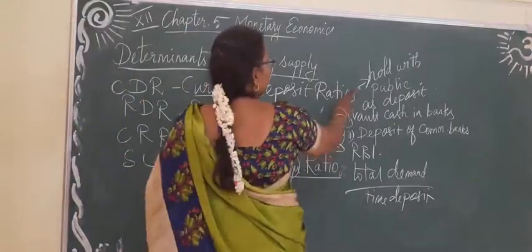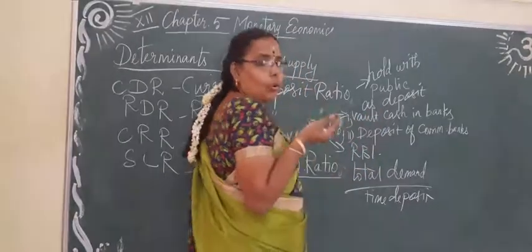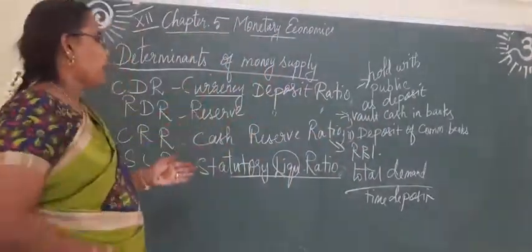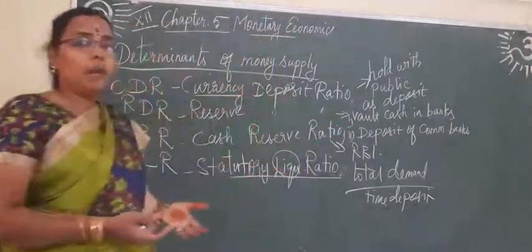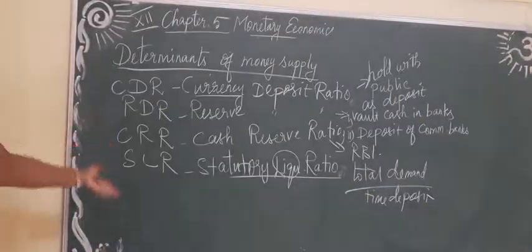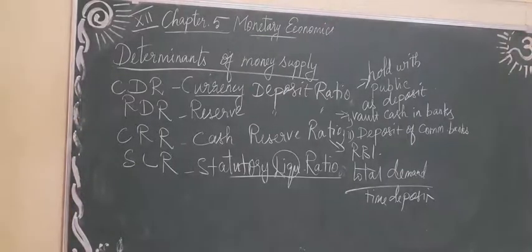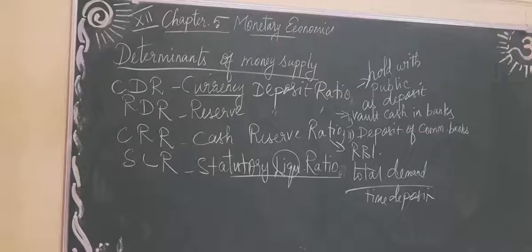These are the four determinants of money supply. In the next class, we will see the quantity theories of money — the famous Irving Fisher's quantity theory, and also Marshall's equation and Keynes' approach — in the next video.